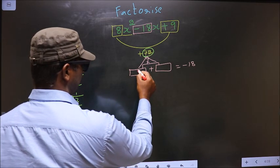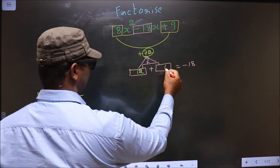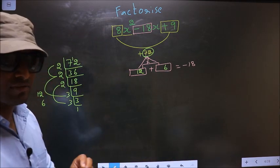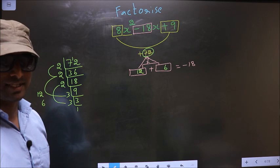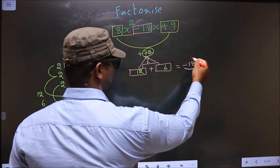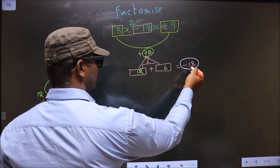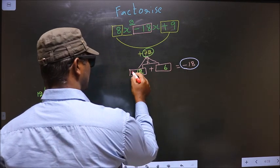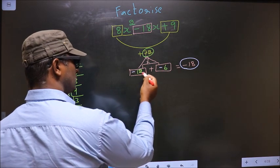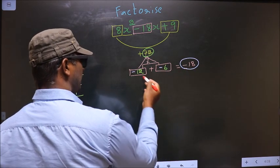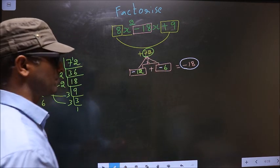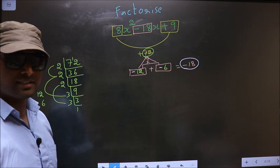So here I write 12 and here I write 6. Now we should adjust the signs. What I mean is, here we should get minus 18. To get minus 18 here, I should place negative here and also here. Minus 12 minus 6 is minus 18. Minus 12 into minus 6 is plus 72. So we have adjusted the signs.